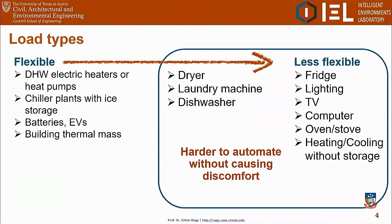We discussed that there were different types of loads — some are much more flexible than others, and we can modify or curtail them without causing much discomfort to users. We're talking more about domestic hot water heaters, electric vehicles, batteries, chiller plants in commercial buildings that we can use to store ice for cooling, and also the thermal mass of the building. Some other loads were actually much harder to modify, although this might change in the future. In reinforcement learning and demand response, we focus more on the most flexible loads.